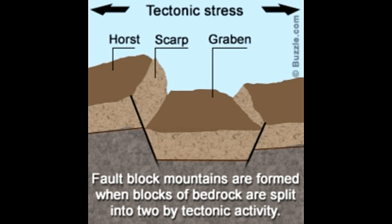To understand the process behind the formation of fault block mountains, it is necessary to get to know some basic principles of tectonics, and what exactly faults are. What is a fault? A fault is a fissure in the Earth's crust. Faults are formed due to tectonic forces, caused by the continuous motion of magma in the Earth's interior. Tectonic forces are responsible for continental drift. In the past, these same forces united and then broke up the supercontinent Pangea,